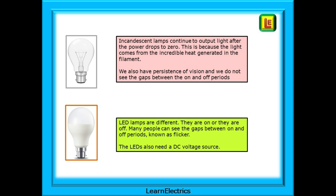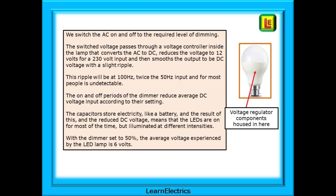LEDs also need a DC voltage source. We switch the AC on and off inside the dimmer switch to achieve the required level of dimming. The switched voltage then passes through a voltage controller inside the lamp body that converts the AC to DC, and then reduces the voltage by using a voltage regulator that limits the voltage to 12V DC for a 230V AC input. It will then smooth the output to the LEDs to be a DC voltage with a slight ripple. This ripple will be at 100 Hz — twice the 50 Hz input — making 100 half cycles per second.